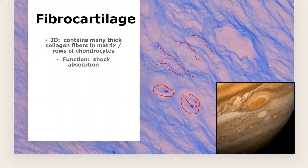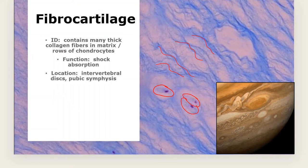The function of fibrocartilage is shock absorption. You'd expect to find it in areas under high pressure, like the intervertebral discs between vertebrae — every time you take a step you're bouncing on your vertebral column, so you need shock absorption. Another location is the pubic symphysis, where the two pubic bones meet, which also experiences high stress during walking.